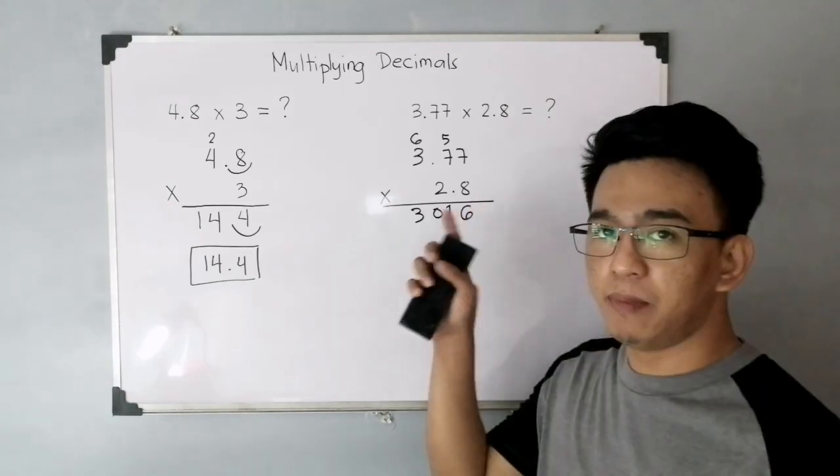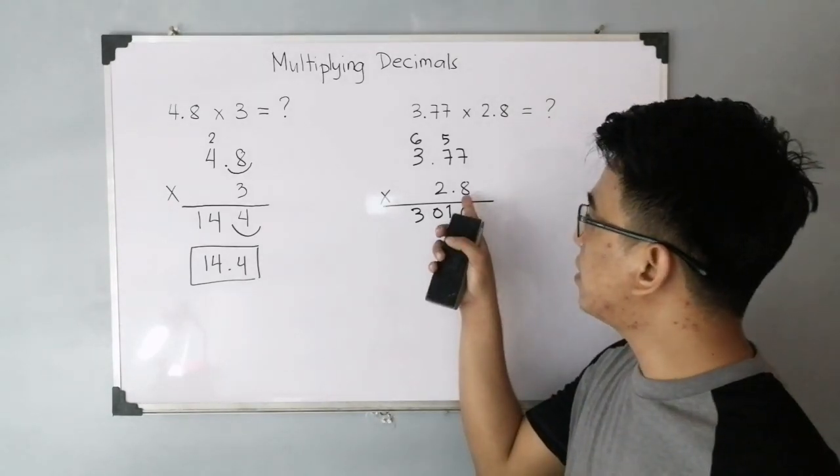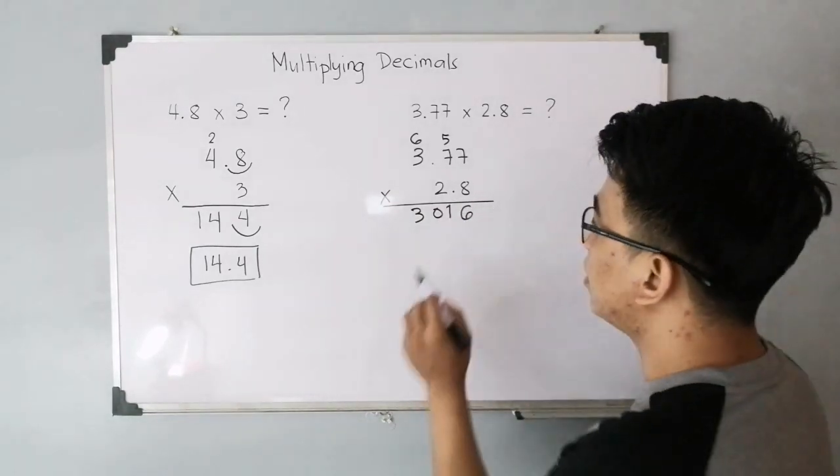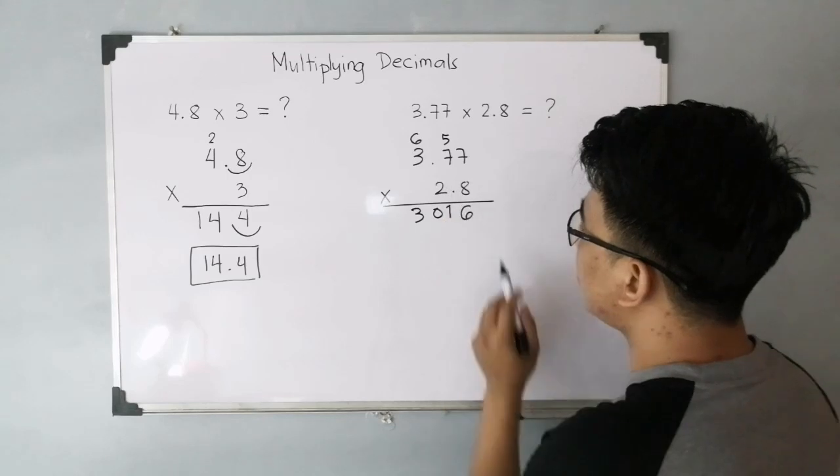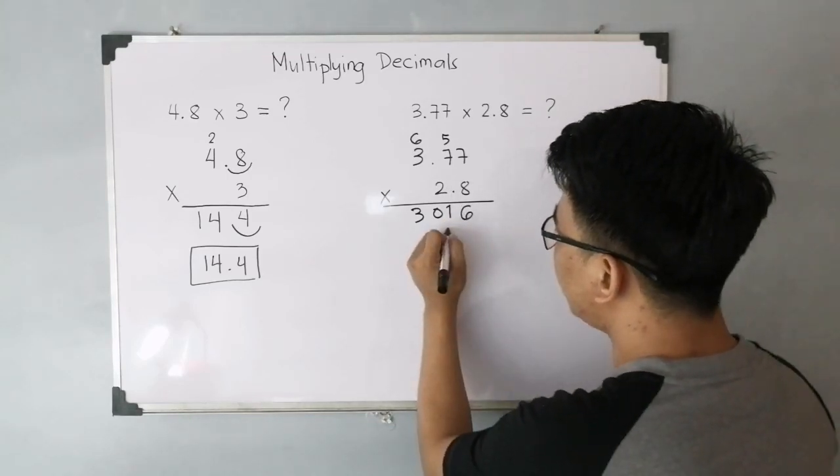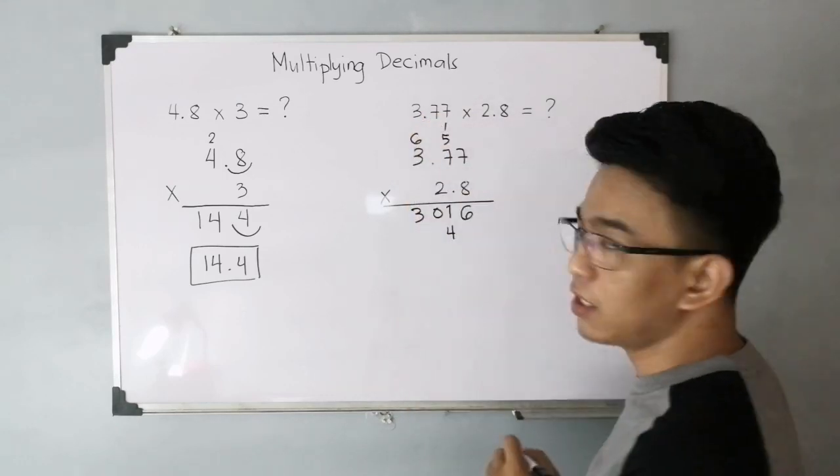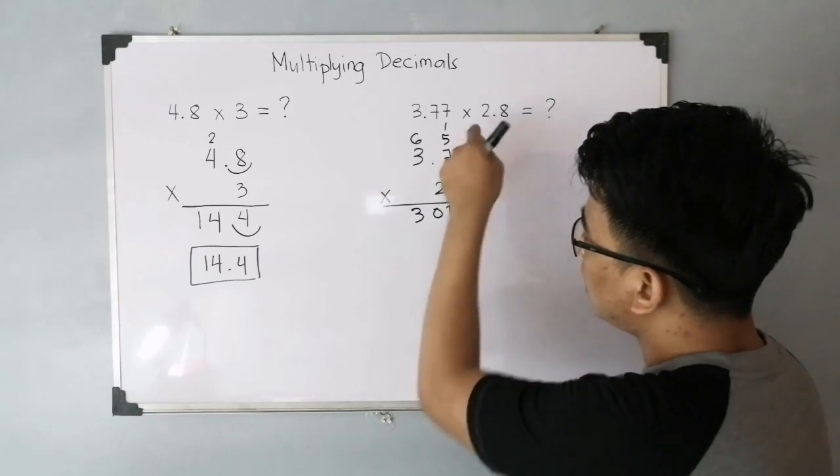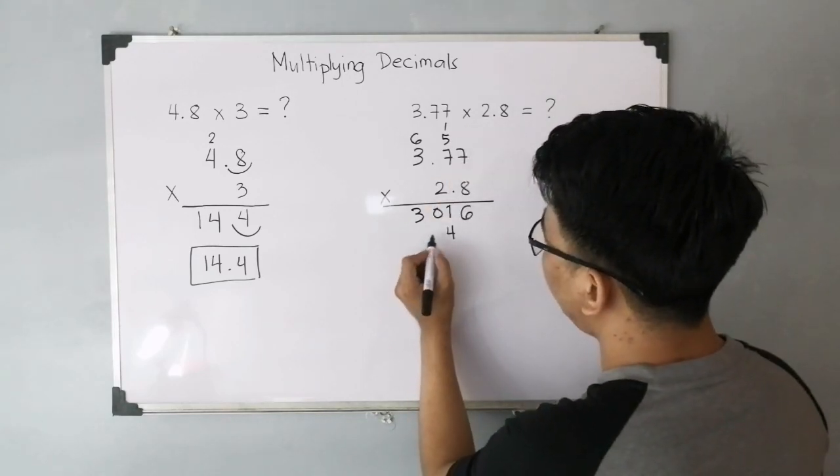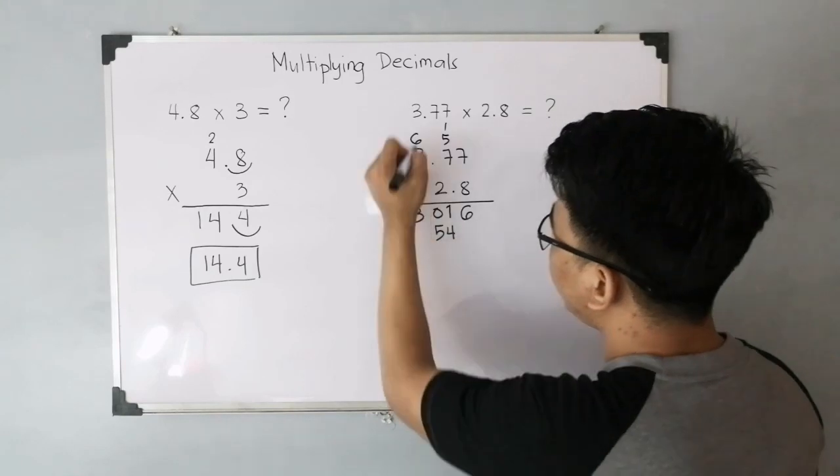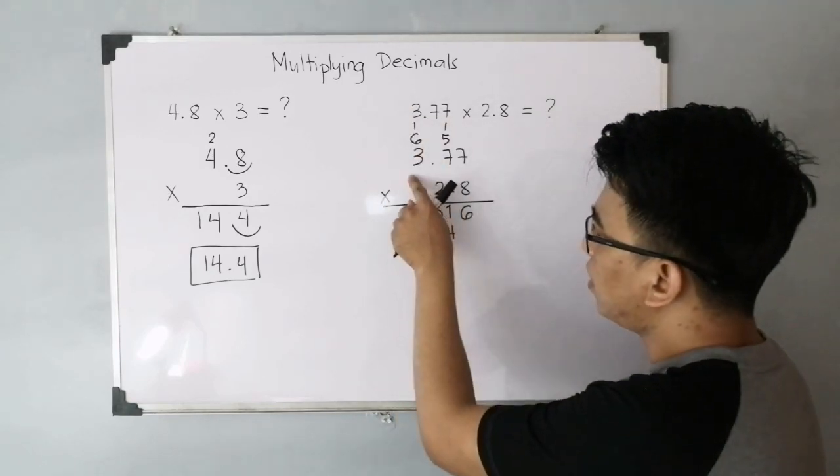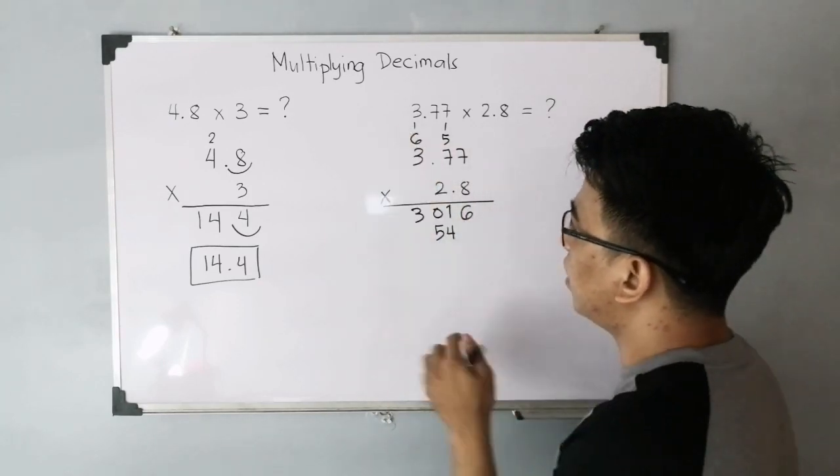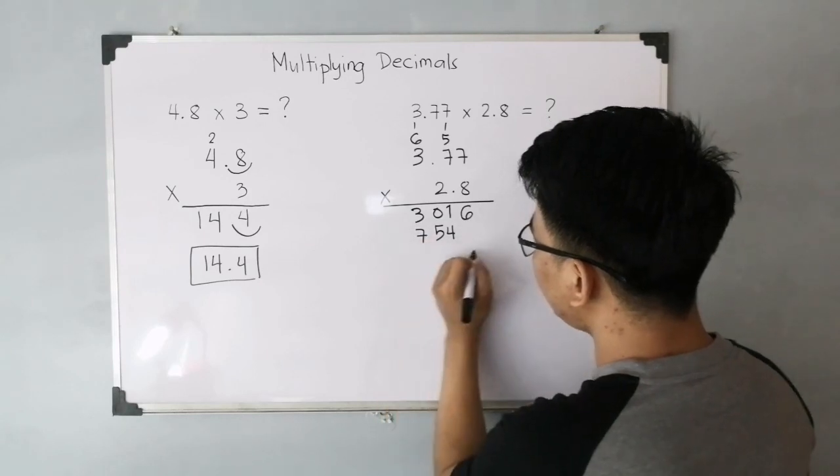Now, after you multiply the 8 with 3.77, you also need to multiply the 2 by 3.77. So, 2 times 7. That will give you 14. Carry 1. Again, this is above the 7. 2 times 7. 14 also. Plus 1. That will give you 15. So, 5. Then carry 1. And then 2 times 3. That is 6. Plus 1. 2 times 3 plus 1. That is 7.